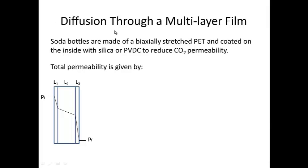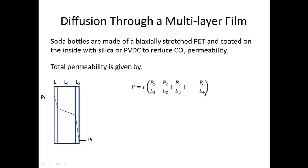So let's take a look now at a multi-layered thin film polymer. In this case, such as in the case of soda bottles, you have polyethylene terephthalate that's coated on the inside with silica glass or PVDC — polyvinyl dichloride — to reduce the CO2 permeability through the membrane. In this case, total permeability is given by the length or thickness of the total multi-layered film times the permeability of the first layer divided by the thickness of the first layer, plus the permeability of the second layer divided by the thickness of the second layer, and so on out to the nth permeability divided by the nth thickness. We see that there's a concentration gradient across each layer of the multi-layered film, and this concentration gradient changes as a function of which section of the film we're in, because of the different permeabilities across each of the different layers of polymer.